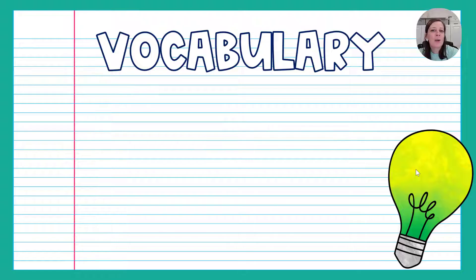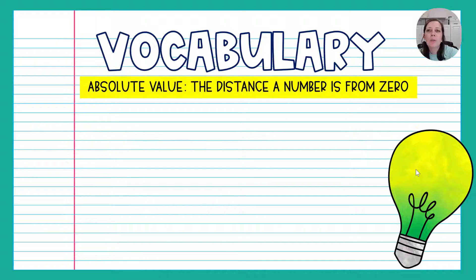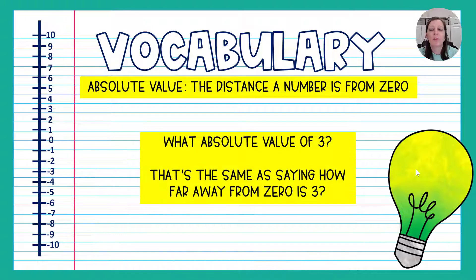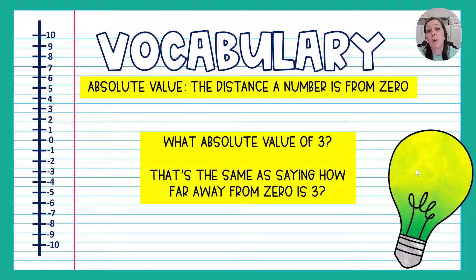Let's start with some vocabulary. What in the world is absolute value? Absolute value is the distance a number is from zero. So looking at our number line, if I ask you the absolute value of three, what I'm really saying is how far away from zero is three — what's the distance between zero and three?